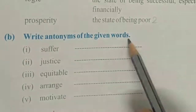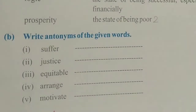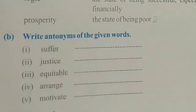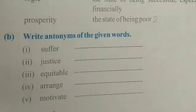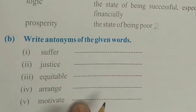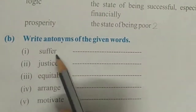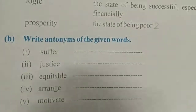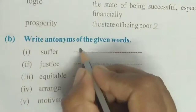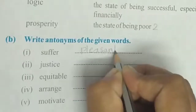Next, write antonyms of the given words. Antonyms means words which have the opposite meaning, or opposite words. Antonyms wo hote hain jis mein hum kisi shabd ka vipreet arth batate hain. In this question we have to write the opposite meanings or antonyms of these words. The first is suffer — suffer means jab koi cheez ko hum bahut bardaasht karte hain. Its opposite is pleasant. P-L-E-A-S-A-N-T. Pleasant.